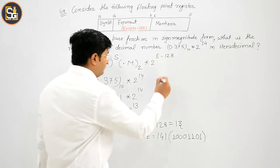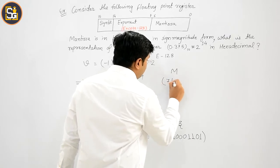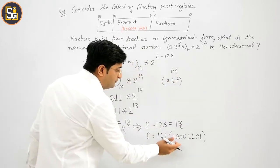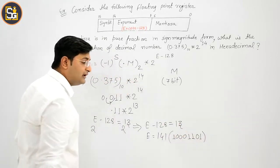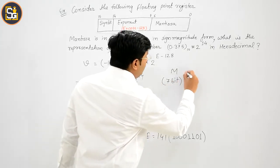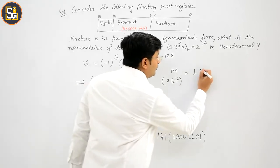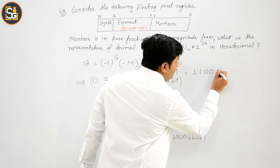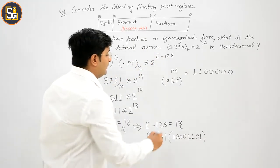Now, what is M. M आपका कितने bit का है - 7 bit. E आपका 8 bit का है - 100, 11, 01 आगया, उसमें कोई doubt नहीं है. Now, 7 bit का M है - 1 and 1, और बाकी से अब आप 5 bit क्या रखेंगे - zeros.